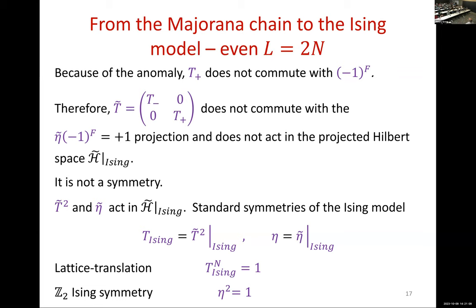What are the symmetries? First, we can take the square of T̃. We take the square, the anomaly drops out, and these operators act in both the big and projected Hilbert space. We define T_Ising as T̃² projected, and η as the Z2 Ising symmetry projected. Since we took a square, this operator's N-th power is one — it's like two translations of the fermion, which becomes translation by one site for the boson since we grouped fermions into pairs. So this is the traditional picture of Ising: a chain with N sites, T_Ising^N = 1, and η² = 1. What happened to the translation that we lost? In the 21st century, every time you lose a symmetry, it comes out somewhere — perhaps as a non-invertible symmetry, and that's indeed the case here.